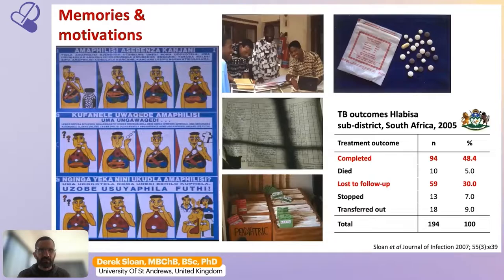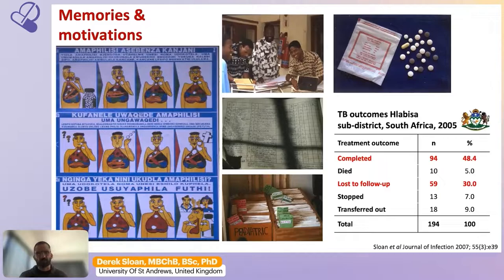We often talk about that six-month course as short course, but anyone who has had to take it realizes it's not short at all. From my experience working in KwaZulu-Natal, South Africa, getting people through a full course of TB therapy — particularly those who were HIV co-infected — was very difficult. We lost approximately 30% of patients to follow-up before the end of treatment, and many subsequently died or re-presented with much harder to treat drug-resistant tuberculosis.